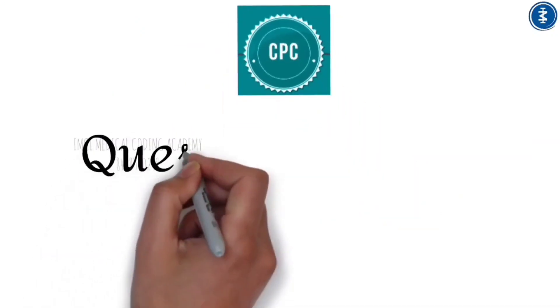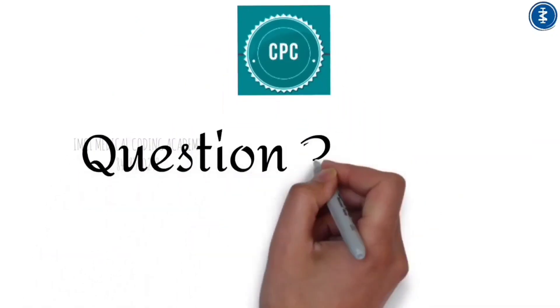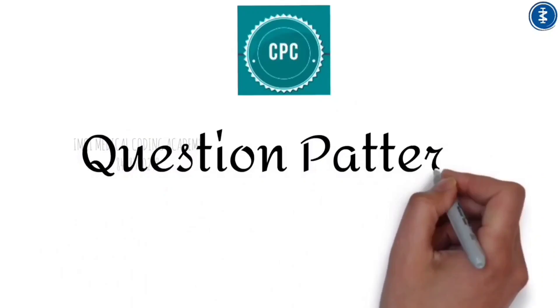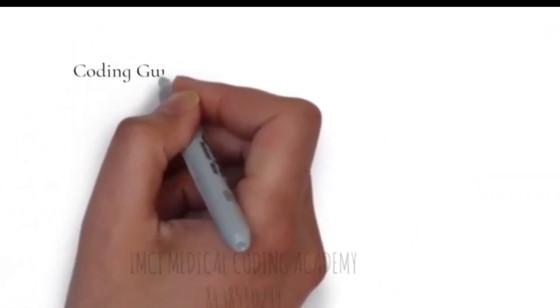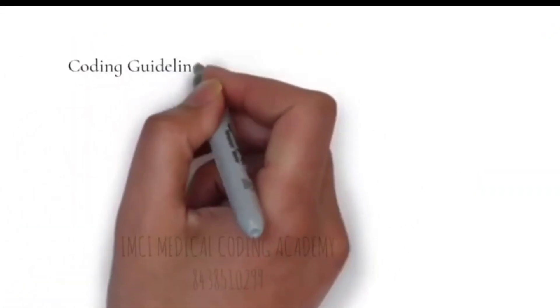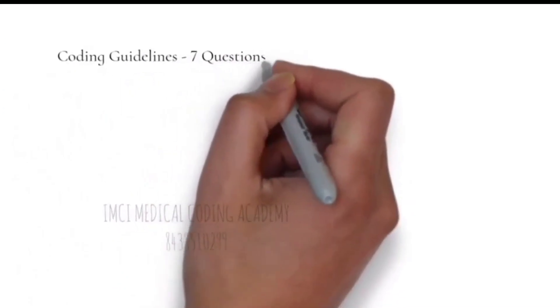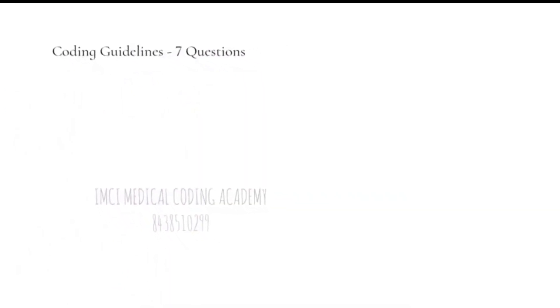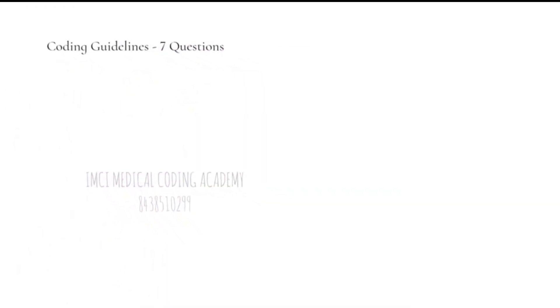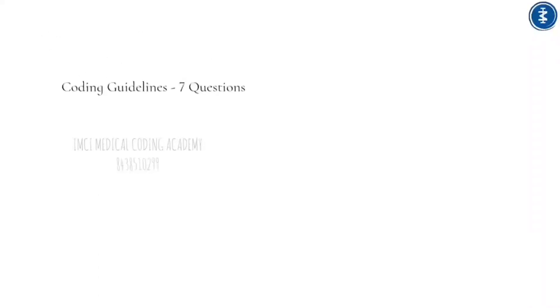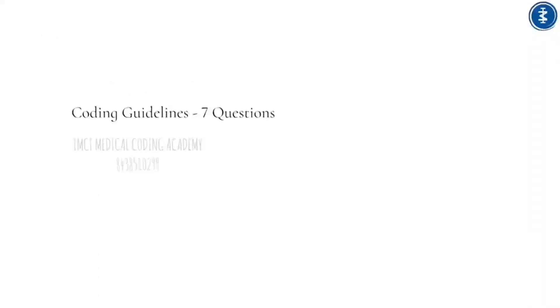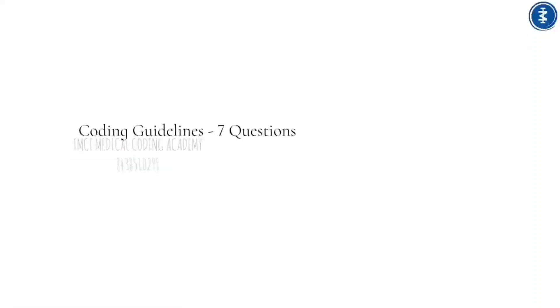Now let's discuss the CPC exam question pattern. From the Coding Guidelines section, there are 7 questions. This portion covers general coding guidelines, modifiers, symbols, and more. From the Surgery portion, there are six chapters with six questions each, totaling 36 questions.